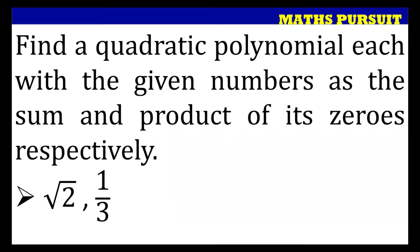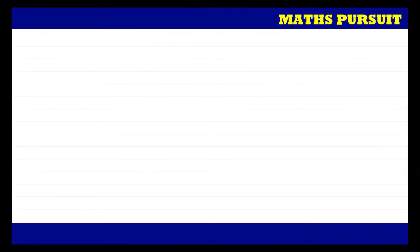The given question is: find a quadratic polynomial with the given numbers as the sum and product of its zeros respectively, where the given numbers are root 2 and 1 upon 3. Let us see how we can find the quadratic polynomial with the help of these two things.